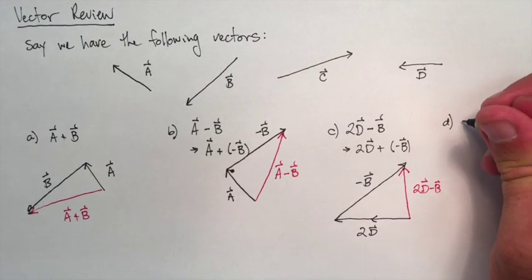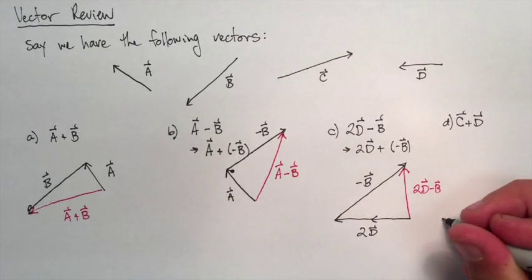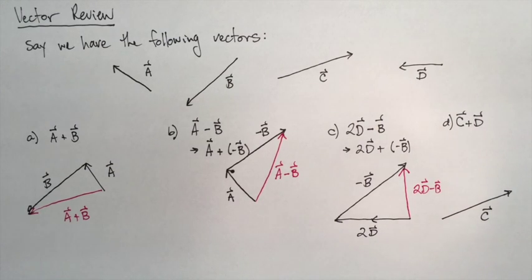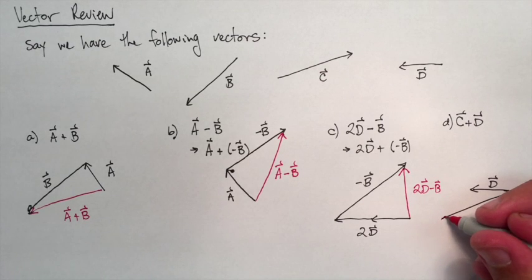Last one here, it's going to be C plus D. So we're just going to pick up C and put it down. Pick up D and put it down. And we get our resultant C plus D.